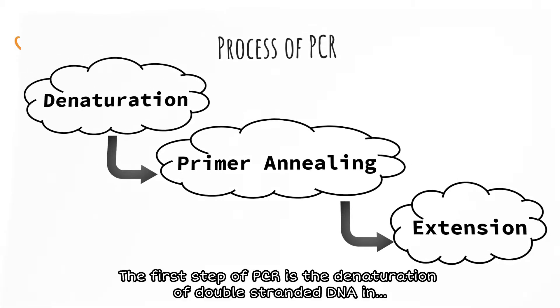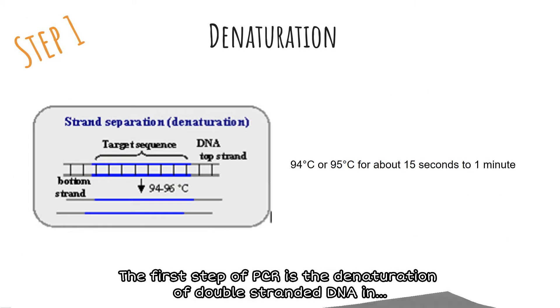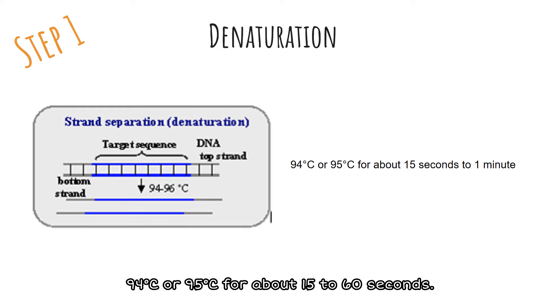The first step of PCR is the denaturation of double-stranded DNA at 94°C or 95°C for about 15 to 60 seconds.